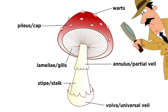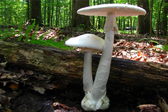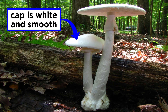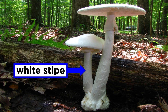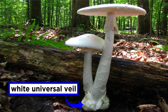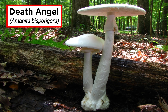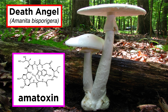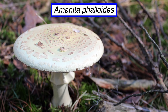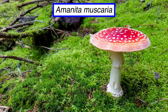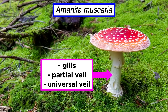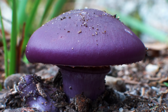When identifying mushrooms, many of these traits can be of assistance in identifying species. Let us use our new knowledge of these structural components to identify another mushroom. This mushroom's cap is white and smooth. It has white gills on the cap's underside. The stipe is white and a partial veil is present. At the base of the stalk, a white universal veil is present. A mushroom with these characteristics can only be one thing — the death angel, Amanita bisporigera. The death angel is an extremely deadly mushroom that produces a poison called amatoxin that causes liver failure if ingested. Many mushrooms within the genus Amanita produce amatoxin. In general, if the mushroom has gills, a partial veil, and a universal veil, it is likely a species from the Amanita genus.